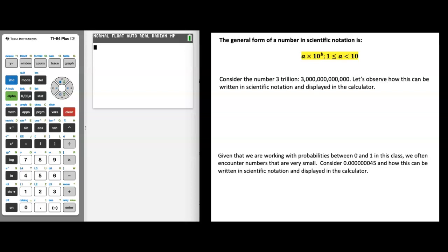Scientific notation is another very important topic to be familiar with in a statistics class, so let's do a quick review. The general form of a number in scientific notation is a number between 1 and 10, multiplied by 10 raised to a power. As you'll see in some examples, sometimes that power of 10 will be positive and sometimes it will be negative.